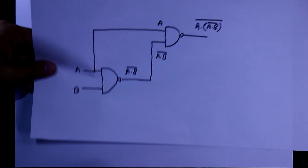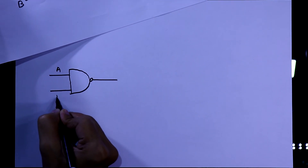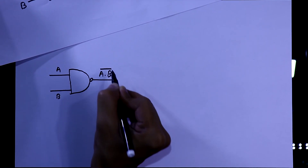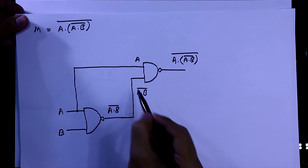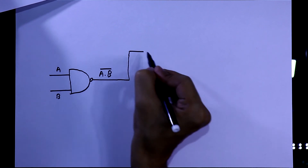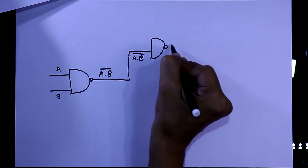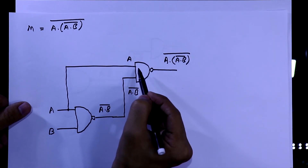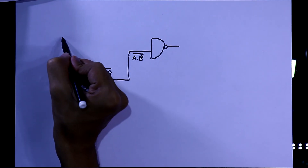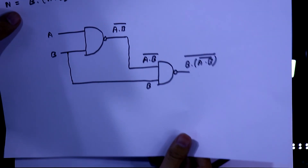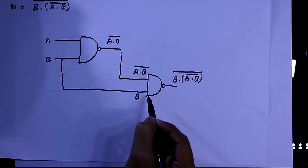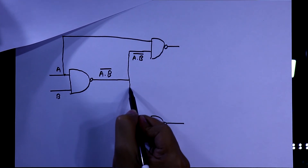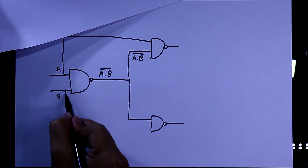Drawing the final circuit: the first NAND gate has inputs A and B, output A dot B-bar. For M, the second NAND gate has inputs A and A dot B-bar. For N, the third NAND gate has inputs A dot B-bar and B. The fourth NAND gate takes outputs of M and N and gives the final XOR output Y.